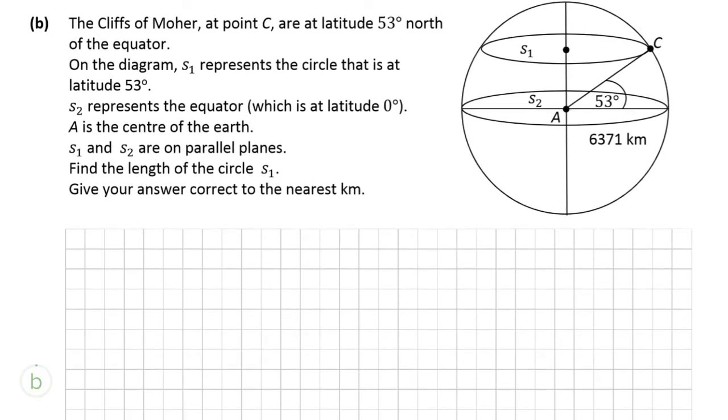So part B tells us that the Cliffs of Moher at point C are at latitude 53 degrees north of the equator. On the diagram we have S1 which is a circle that is at that latitude. So it's basically like a disk inside the sphere but it's going to be above the center. So it's you know obviously above 53 degrees north of the center. We're told that S2 represents the equator itself and of course A is the center of the earth. They're on parallel planes which is very important. We've got to find the length of the circle S1 and give this correctly to the nearest kilometer.